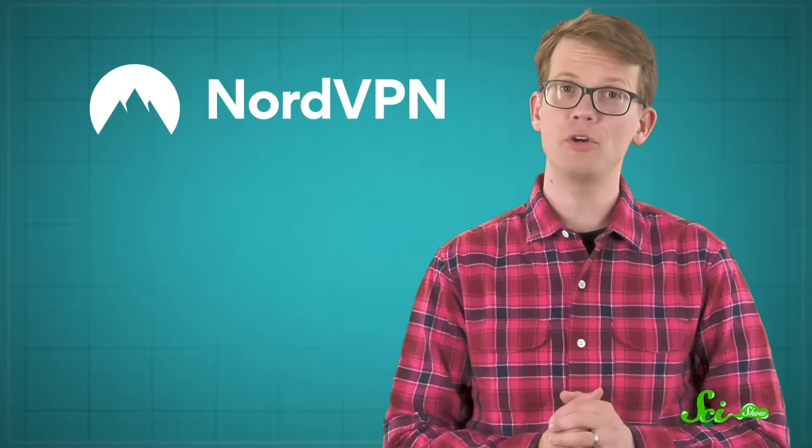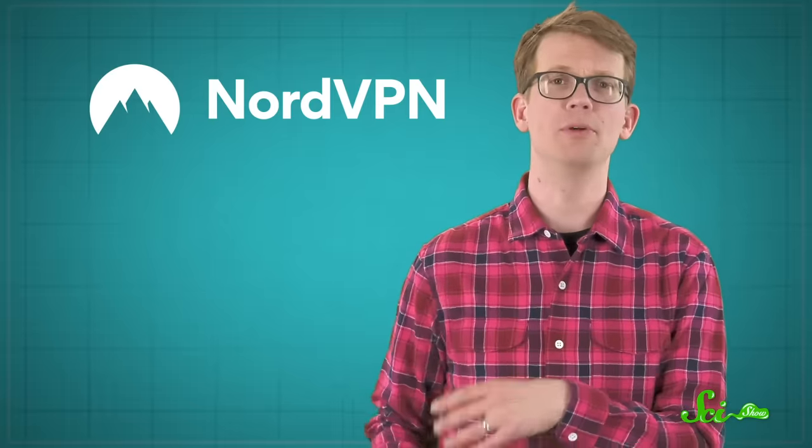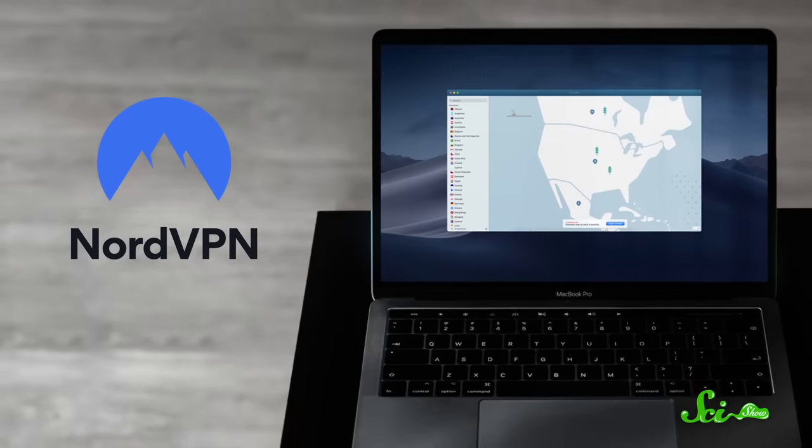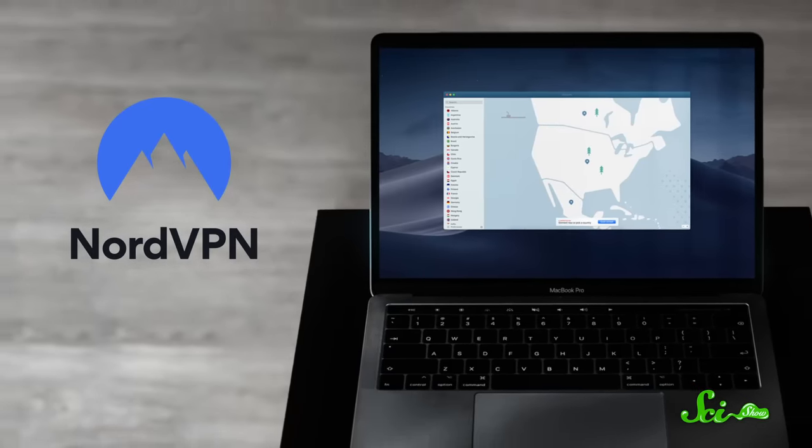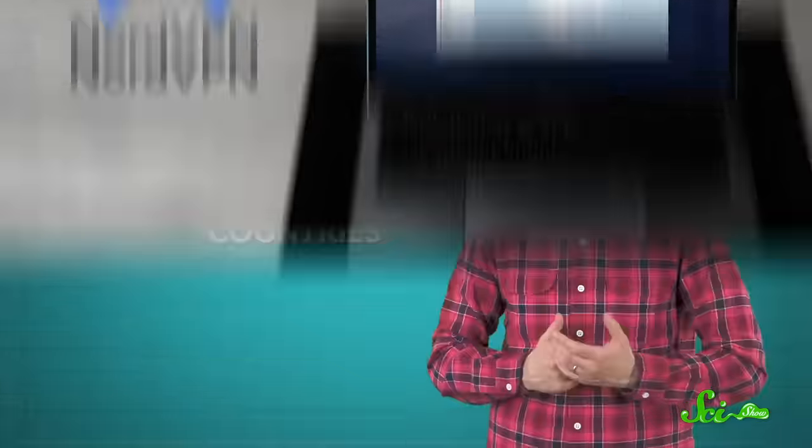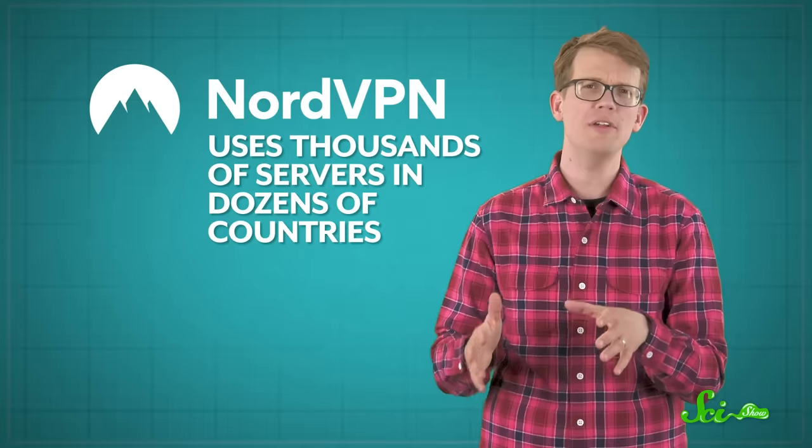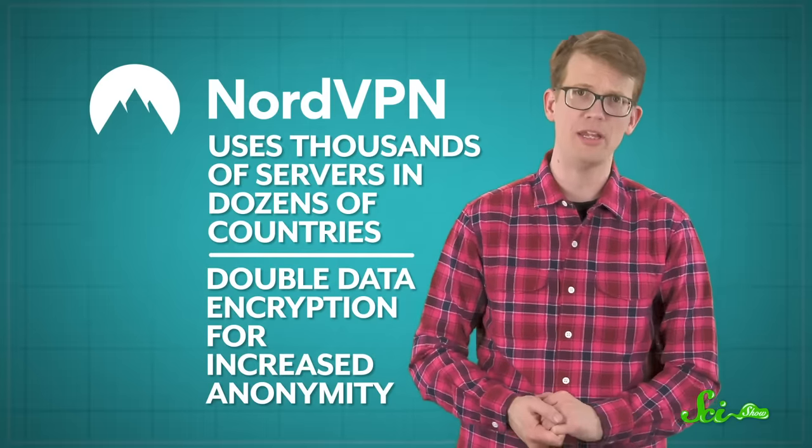If you like going to a nice coffee shop to work, for example, simply getting on their public Wi-Fi could leave you vulnerable. But with a virtual private network from NordVPN, your information is encrypted and sent via one of their super-fast servers so you know it's safe. NordVPN uses thousands of servers in dozens of countries, and you can even have double data encryption for increased anonymity.